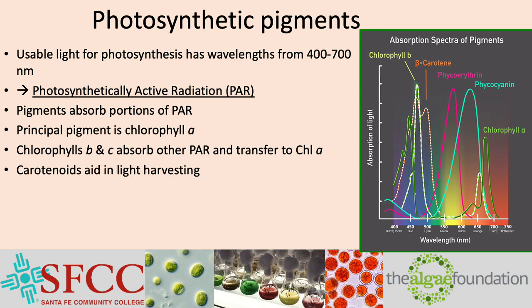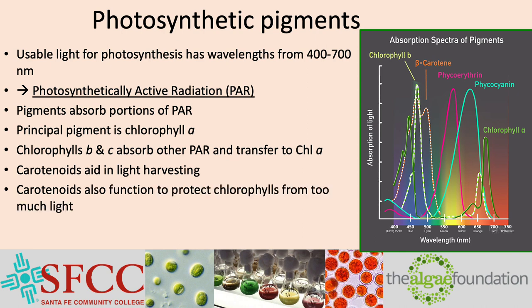Carotenoids aid in gathering light, or light harvesting, and also transfer energy to the chlorophyll A. Carotenoids also function to protect chlorophylls from damage when there is too much light. Phycobiliins are involved in light harvesting. As you can see from the absorbance spectrum for the pigments, the overlapping peaks of light absorbance cover nearly the entire PAR spectrum.